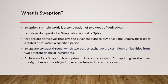Options are a type of derivative contract that give the buyer the right to buy or sell. The buyer can buy or sell the underlying asset at a stated price before a specified period. So the buyer has the right but not the obligation to buy or sell an underlying asset at a given price. The buyer has to pay a premium to the seller, and the transaction happens at a strike price.